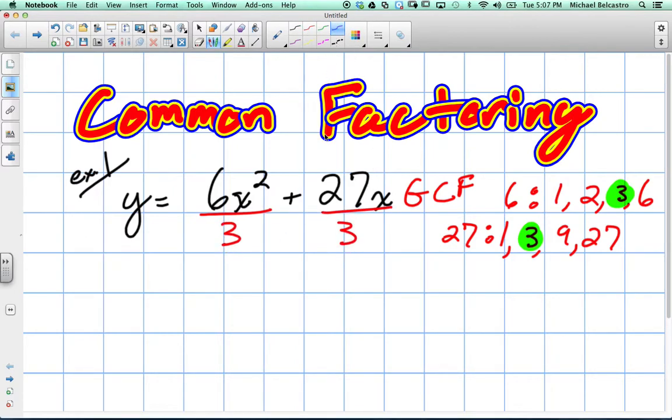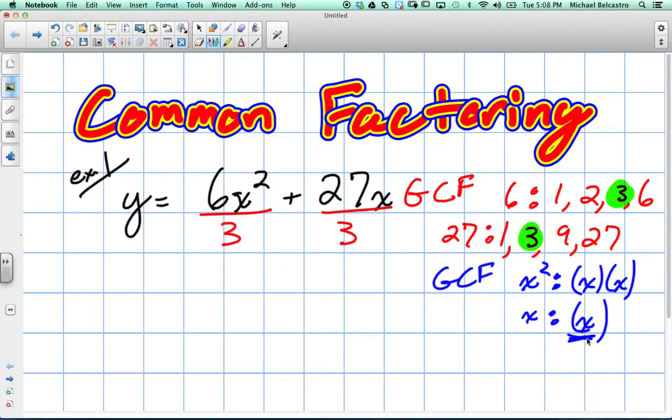We also got to do a greatest common factor with our variables. This one's a little different. We have x squared and x. When we're doing variables, essentially, we want to break up into the number of variables there are. So for x squared, that technically just means we have x times x, and for x, there's only 1. So we look for the lowest value. Because there's only 1, then our greatest common factor is just going to be x itself. So in this case, we're just going to take x.